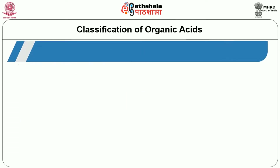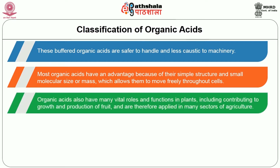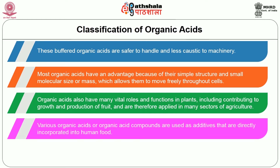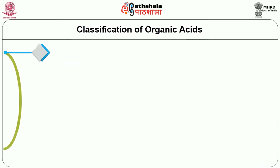These buffered organic acids are safer to handle and less corrosive to machinery. Most organic acids have an advantage because of their simple structure and small molecular size or mass, which allows them to move freely throughout the cells. Organic acids also have many vital roles and functions in plants, including contributing to growth and production of fruit, and are therefore applied in many sectors of agriculture. Various organic acids or organic acid compounds are used as additives that are directly incorporated into human food. On the other hand, these acids are the products of fermentation.